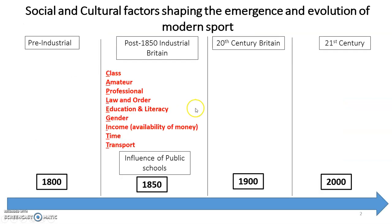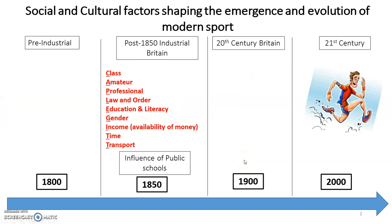This links to the chart we've seen before. We've covered pre-industrial Britain and now we're doing post-1850 industrial Britain. You would have already gone through these factors and how they differ — for example, income: the lower classes had an increase in income from working in factories; time: they had more free time, especially on Saturday afternoons due to half days; and transport: the development of railways meant games could be played nationally, leading to England versus Scotland matches.